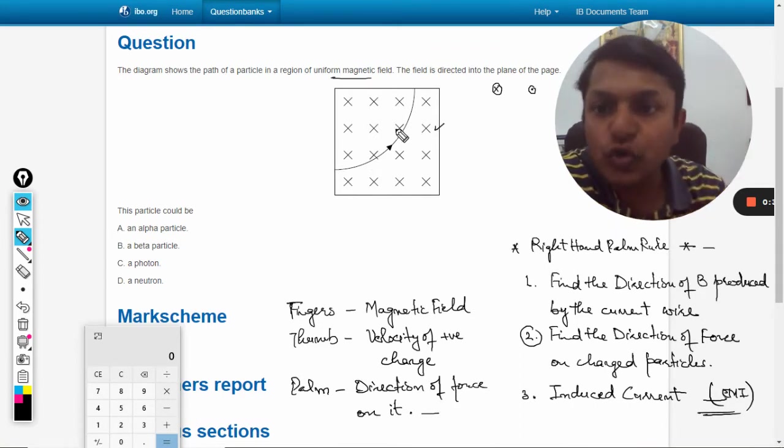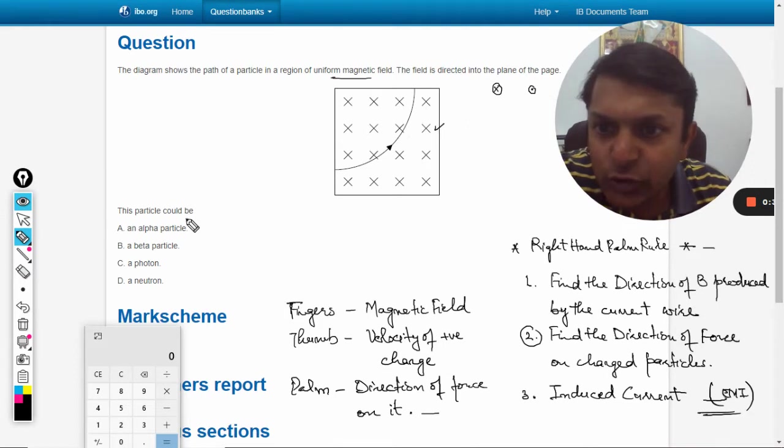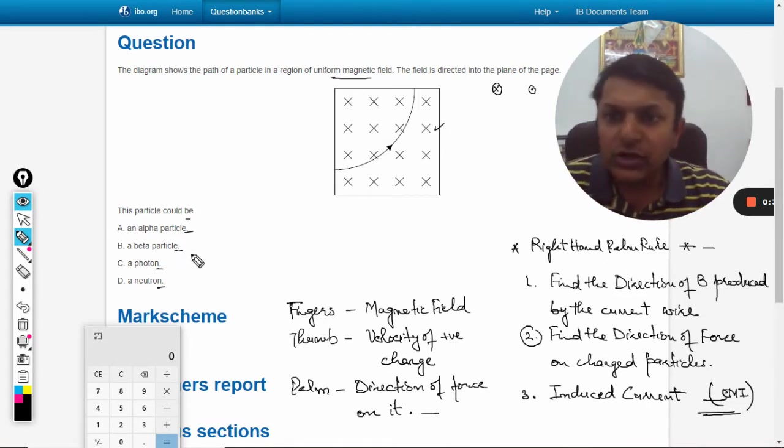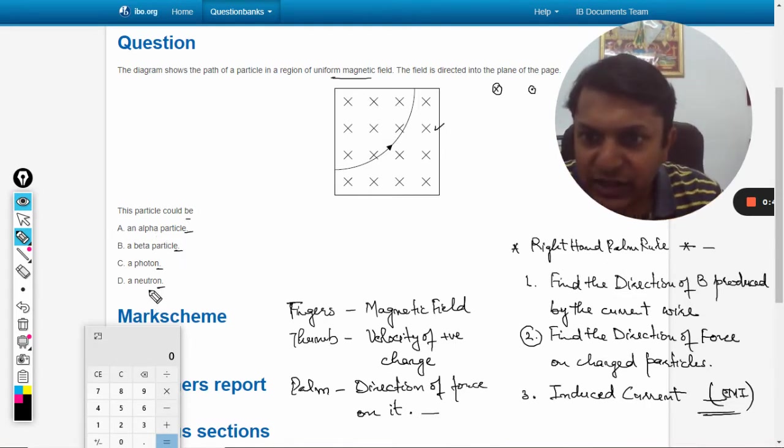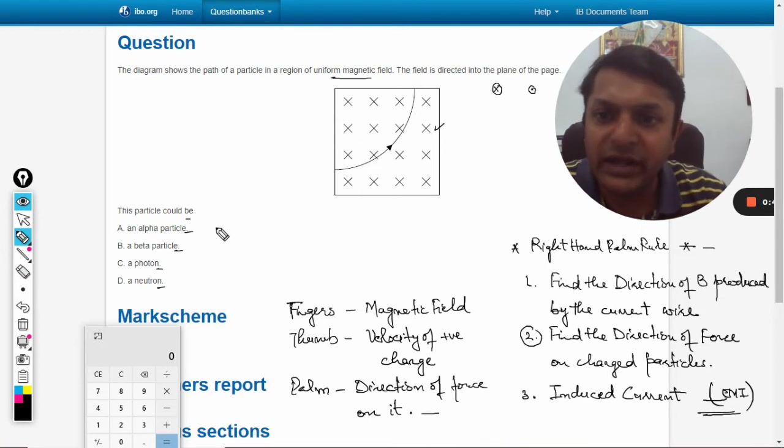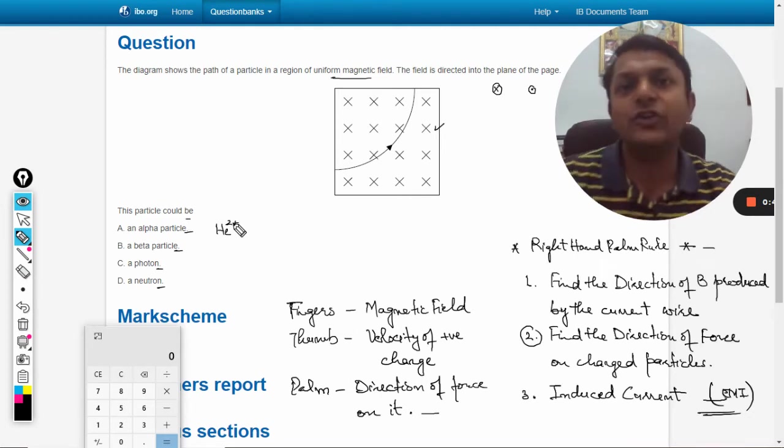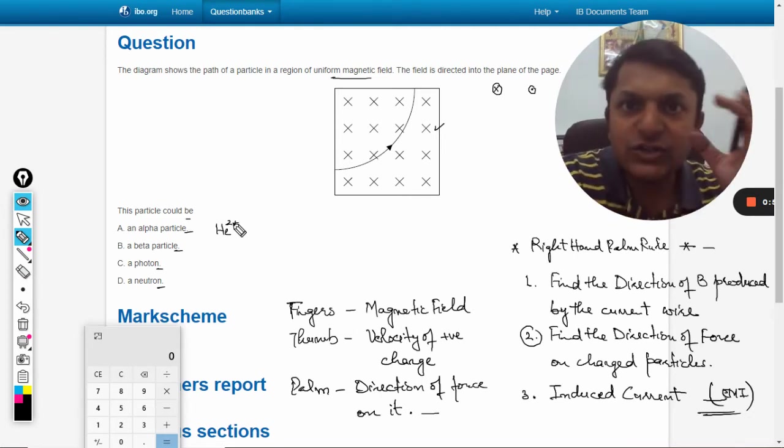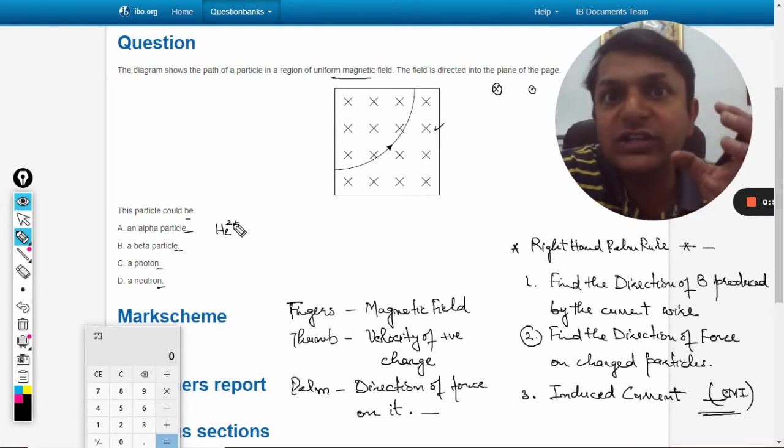This particle could be an alpha particle, beta particle, photon, or neutron. Let's first discuss these particles. An alpha particle is basically a helium nucleus from which two electrons have been removed, so we are left with the nucleus of helium. This is positively charged because there are no electrons.